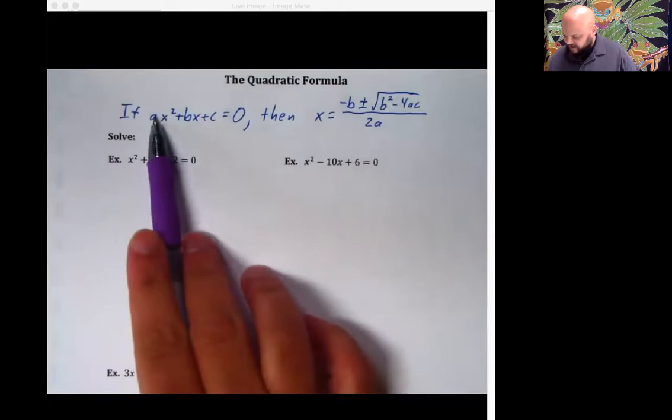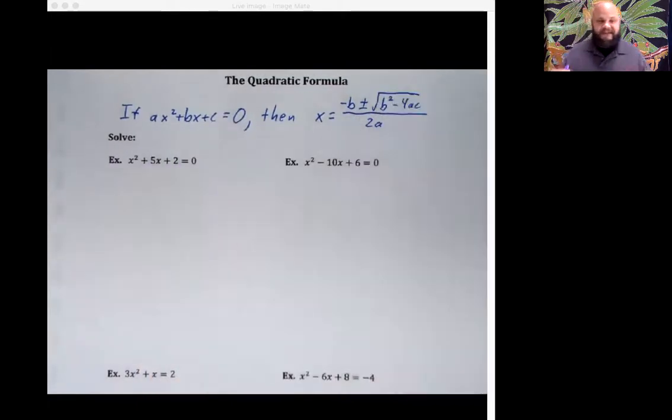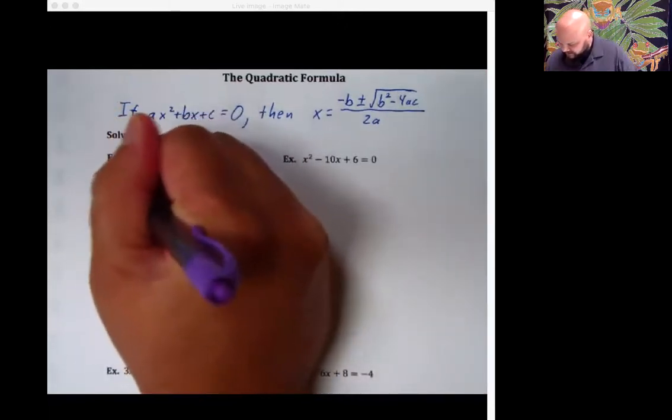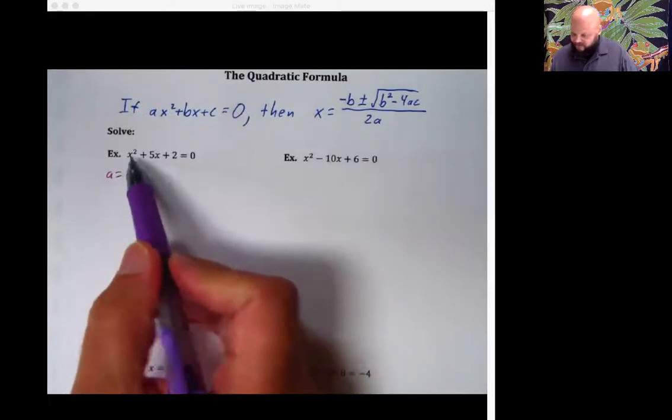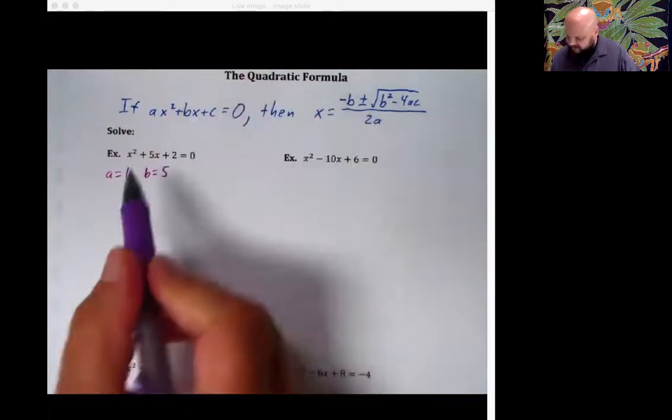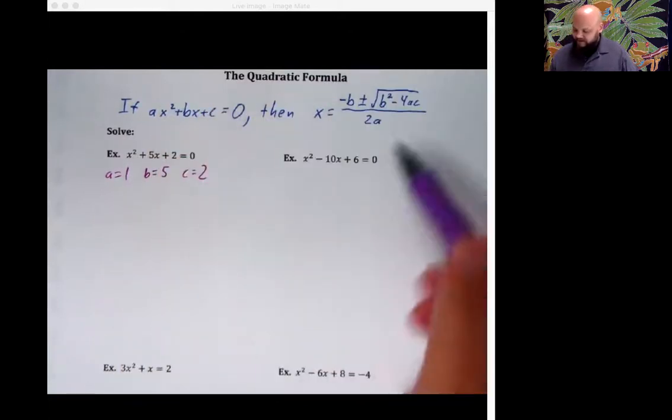That means anytime we've got our a's, b's, and c's, we can just plug them into this and keep working and it will spit out an answer for us. No factoring, no rooting both sides, no completing the square. If I've got a is equal to 1 because there's the 1 in front of x squared right here, and b is equal to 5 because there's a 5 in front of the x, and c is equal to 2, I just plug them in.